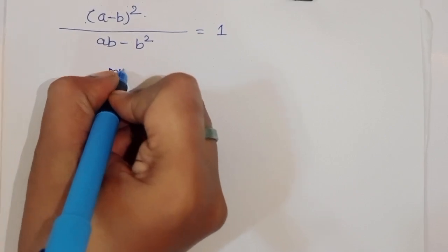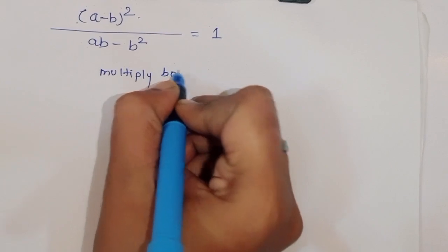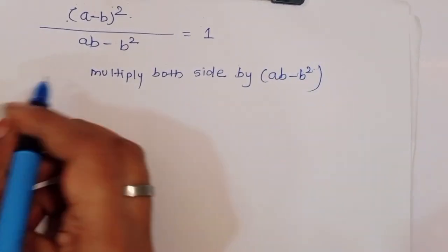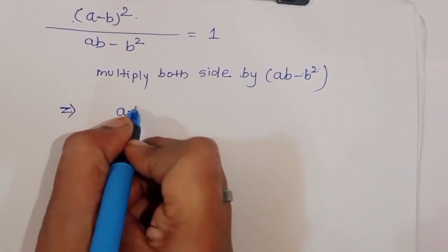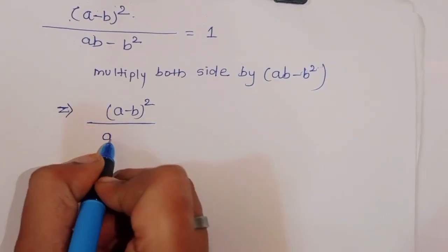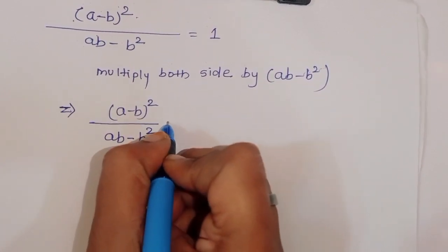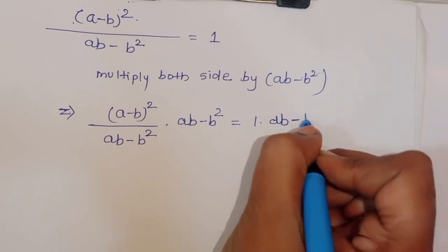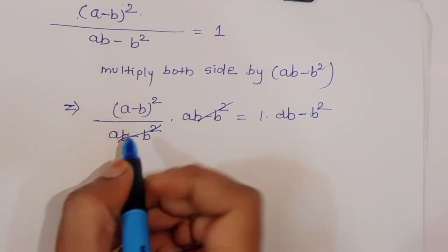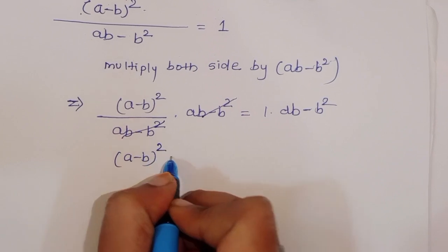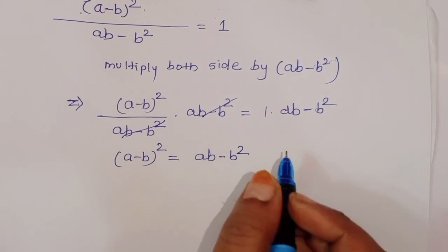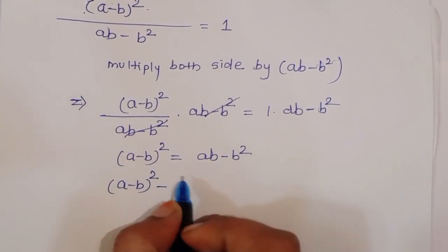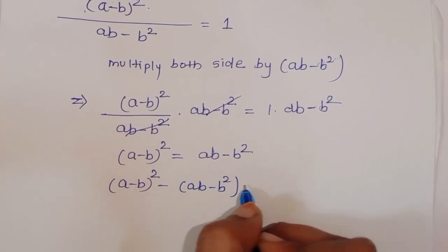Now, multiplying both sides by ab minus b squared, we get a minus b squared divided by ab minus b squared, times ab minus b squared, equals 1 times ab minus b squared. So ab minus b squared cancels, giving us a minus b whole squared equals ab minus b squared.